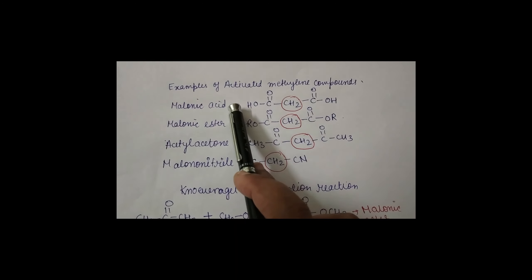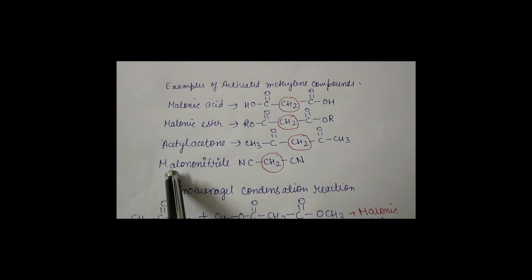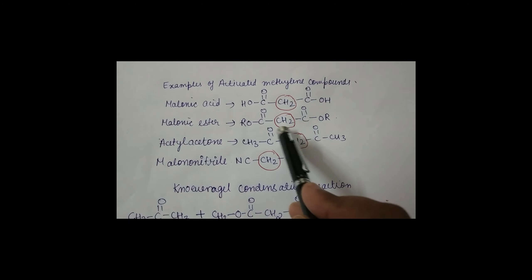Examples of activated methylene compounds include malonic acid, malonic ester, acetyl acetone, and malononitrile. In all these structures, the CH2 group is present between carbonyl carbons. In malononitrile, CN groups are on both sides of the CH2, which makes this methylene group activated.